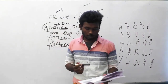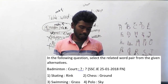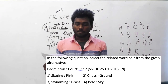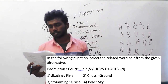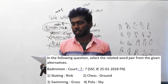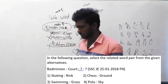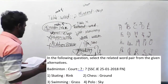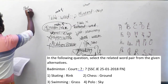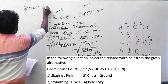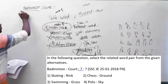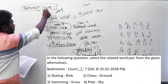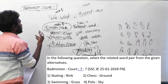Question number 142. Select the related word pair from the given alternatives. This question was asked in SSC JE, 25th January 2018. Badminton is to court implies dash. The options are: skating is to rink, chess is to ground, swimming is to grass, and polo is to sky. For playing badminton you need a court — that is the relation.